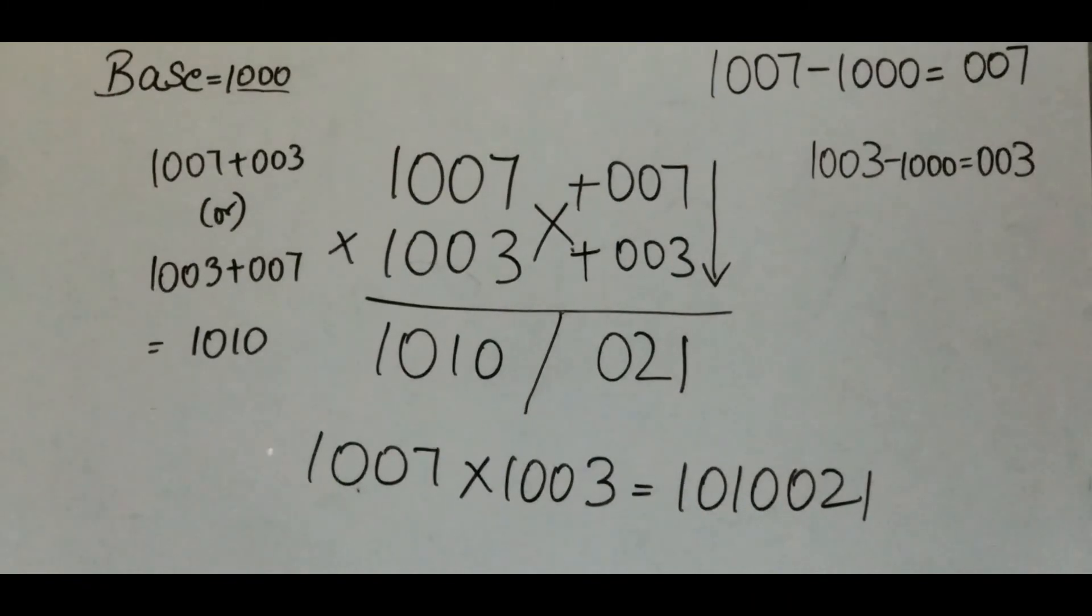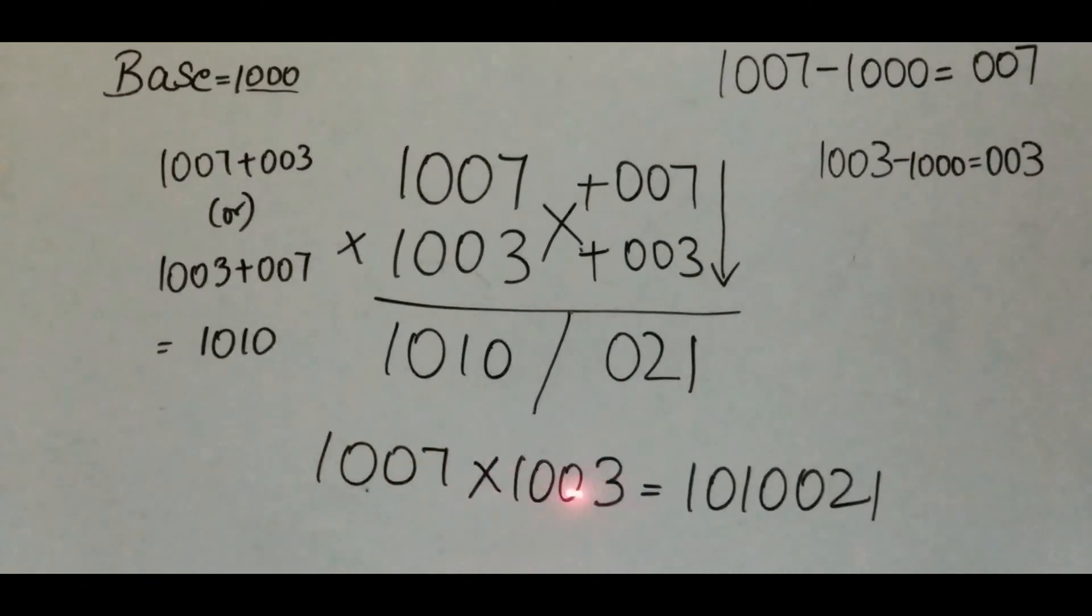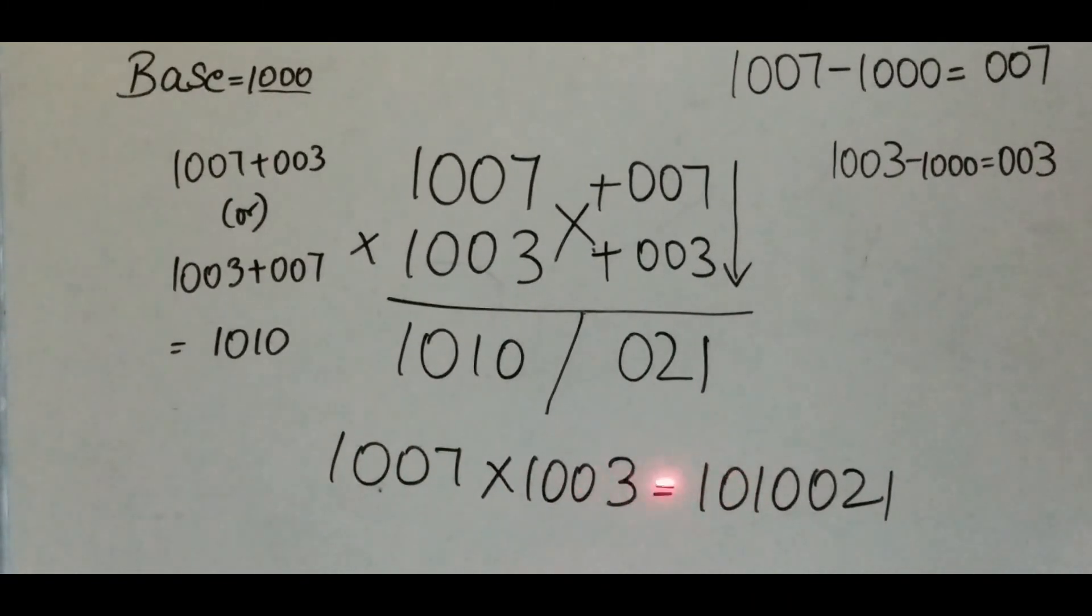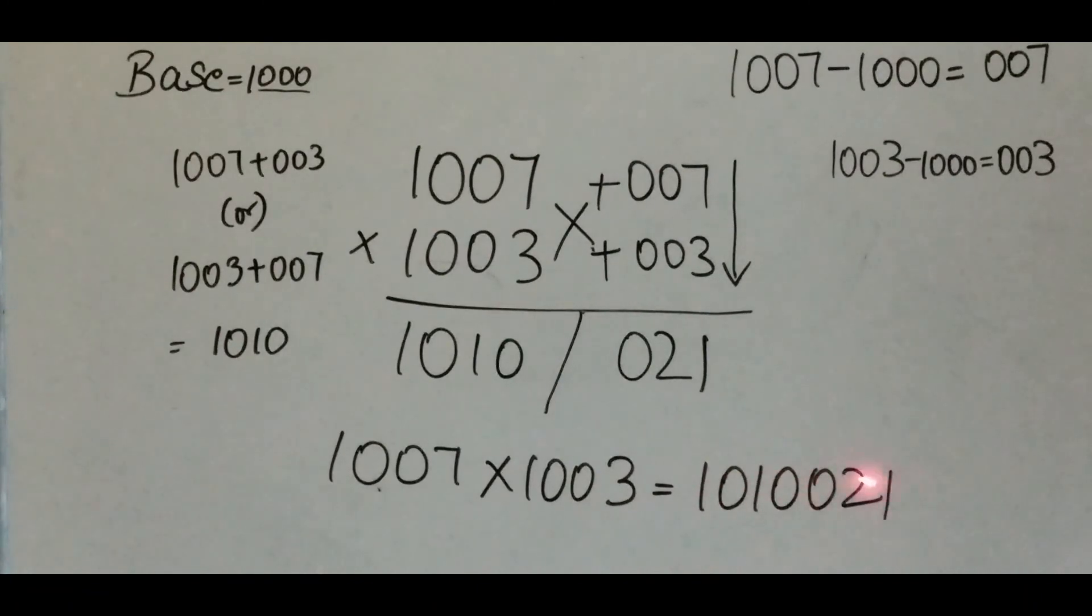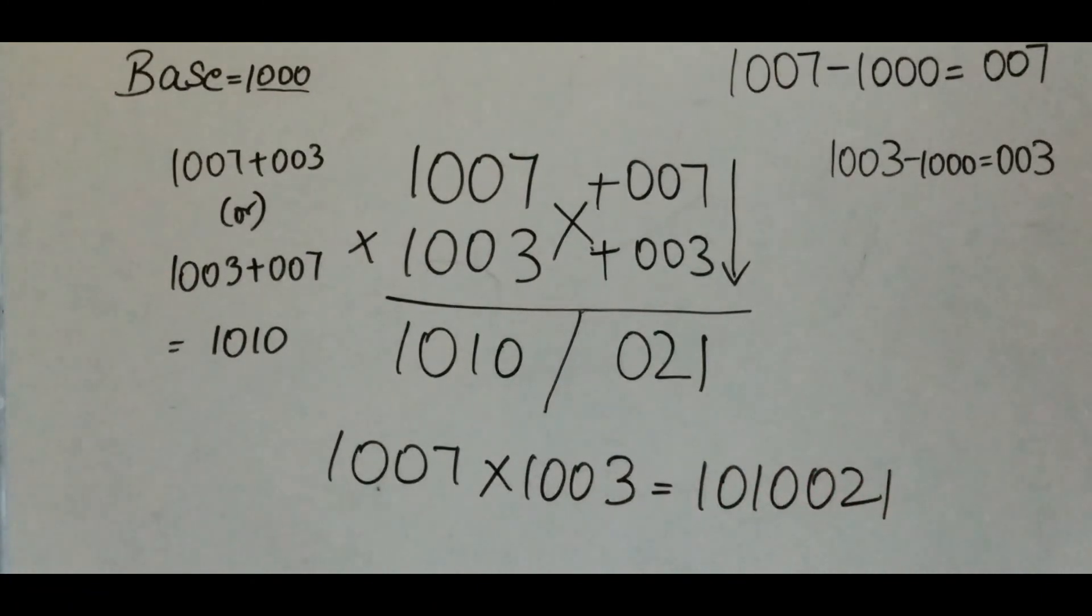So the answer for 1007 times 1003 is 1010021. Thanks for watching.